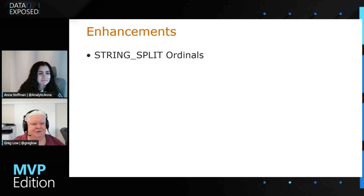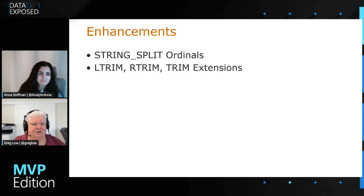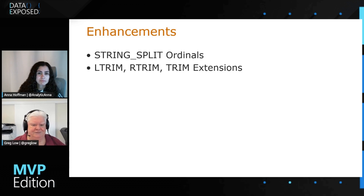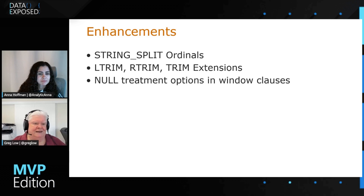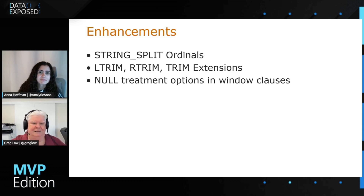STRING_SPLIT got an ordinal a while back. The nice thing with that is, as well as being able to split a string, you can maintain the order or do things like get the third token out of a string — super powerful. LTRIM, RTRIM, and TRIM have been extended so you can now choose the characters that will be trimmed out. Instead of just trimming spaces, I can define all Unicode whitespace characters and trim all of those using a single trim statement. A number of window clauses now have null treatment options — so if you're after the first value of a group and the first value is null, you can instead get the first non-null value.